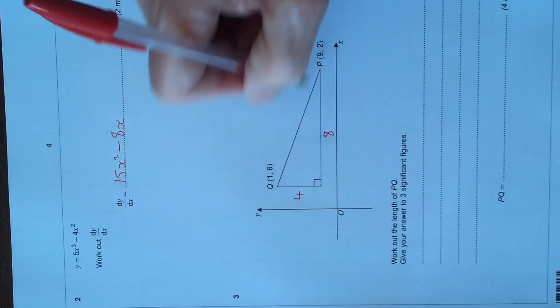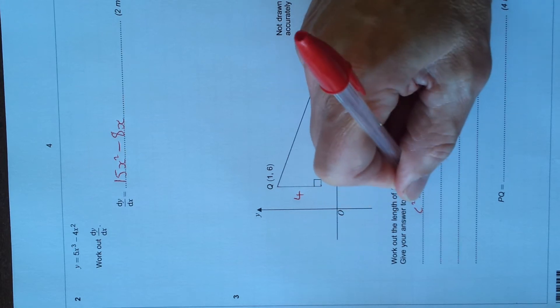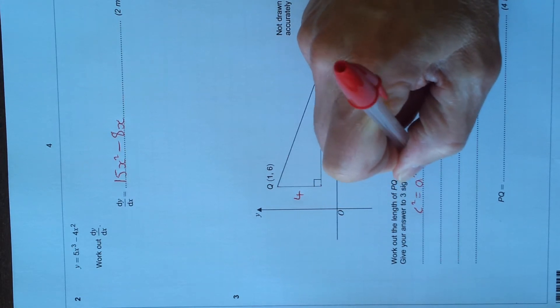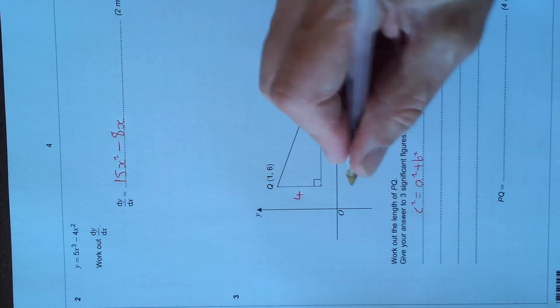We're trying to find the longer side, so that is c² equals a² plus b². We're adding because we're finding the long side. If we're finding one of the shorter sides, we'd subtract. Nice and easy, this one we're adding. So let's put the numbers in.